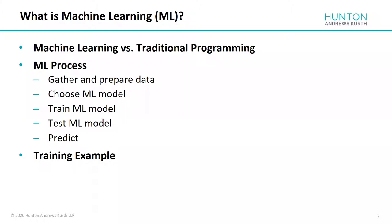So, machine learning versus traditional programming — what is machine learning? In traditional programming, you've got a software engineer writing code with specific algorithms. It can be complex, but it's static in the sense that the code doesn't change. Machine learning's key characteristic is that you use training data and feed it into the machine learning model, which uses the training data to update and improve its performance over time. That's the key distinction and the key advantage that machine learning provides, and why it's so extensively used now.